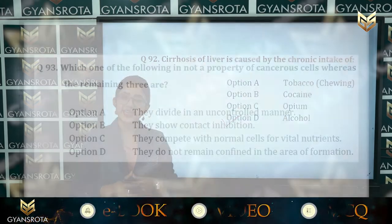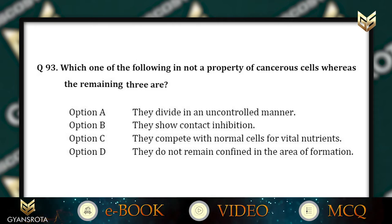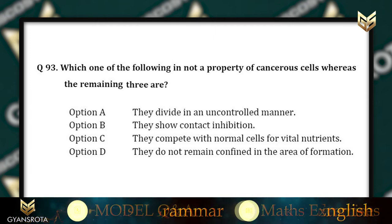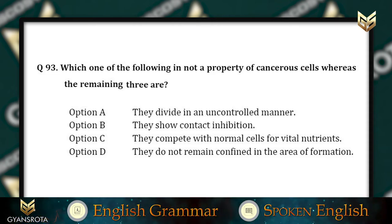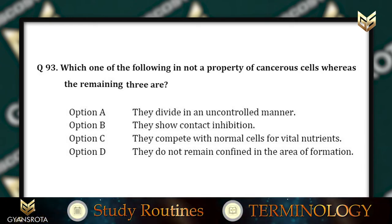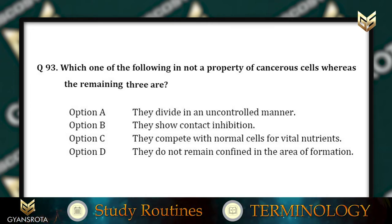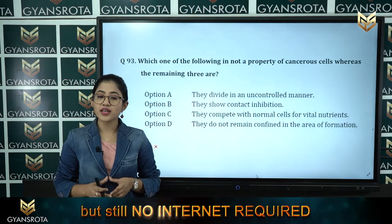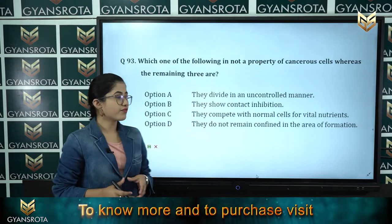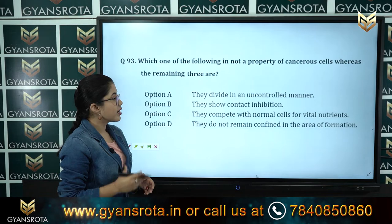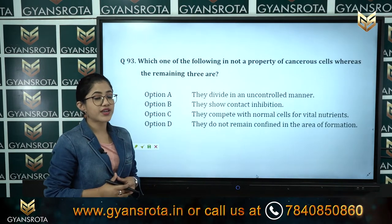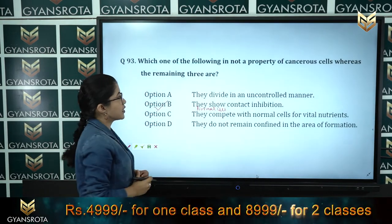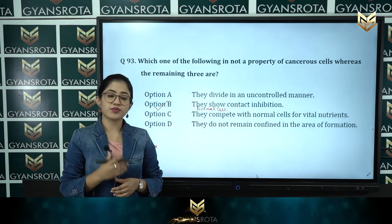Question number 93: Which one of the following is NOT a property of cancerous cells? Option A: they divide in an uncontrolled manner. Option B: they show contact inhibition. Option C: they compete with normal cells for vital nutrients. Option D: they do not remain confined in the area of formation. Option B is not a property of cancerous cells — normal cells show contact inhibition, not cancerous cells. So option B is the correct answer.